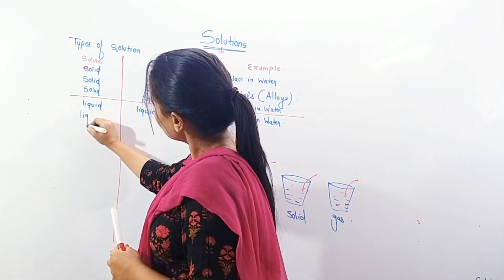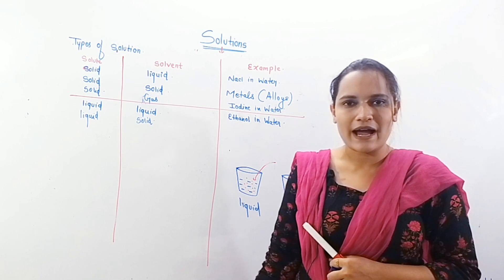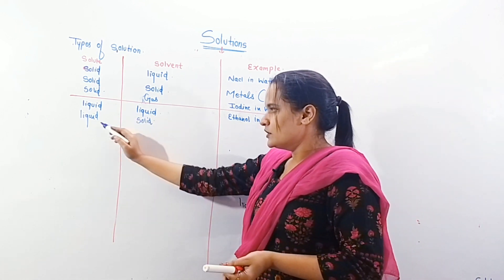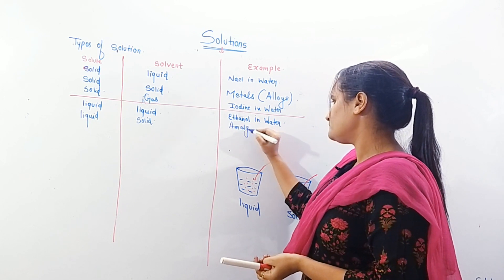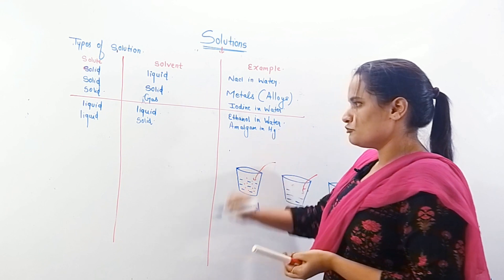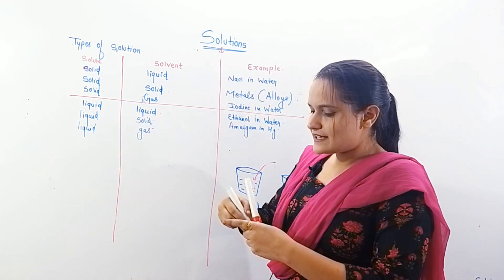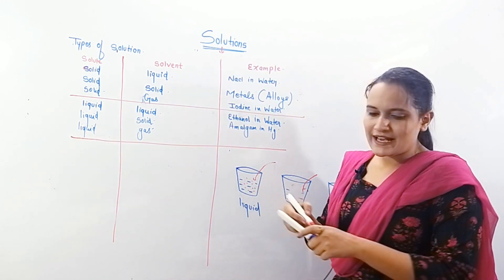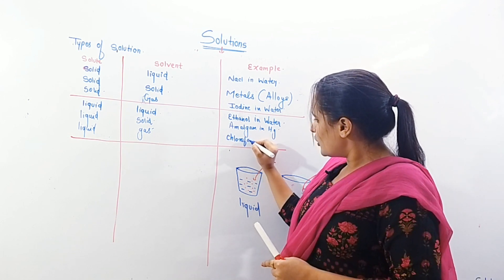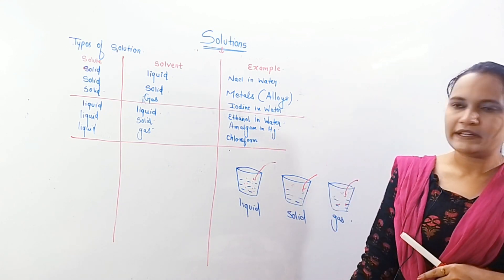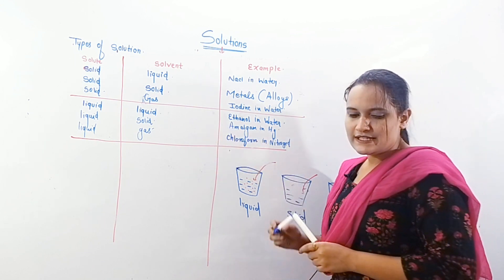For liquid in solid, the best example is amalgam. Mercury (Hg) is in liquid state — amalgam in Hg is an example of liquid in solid. And for liquid in gas, chloroform, which is in liquid state, dissolved in nitrogen is an example of liquid in gas.